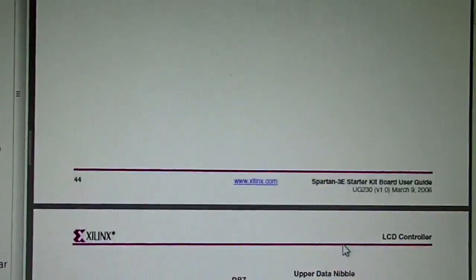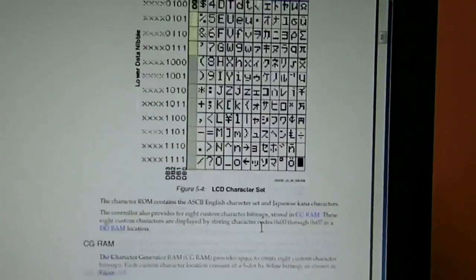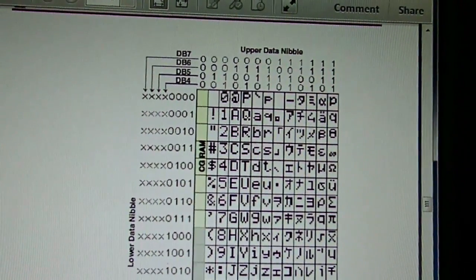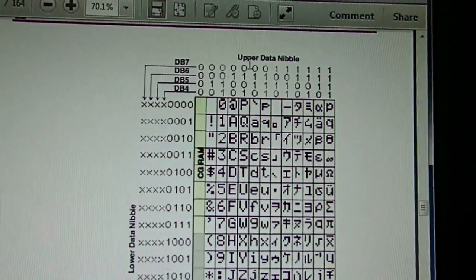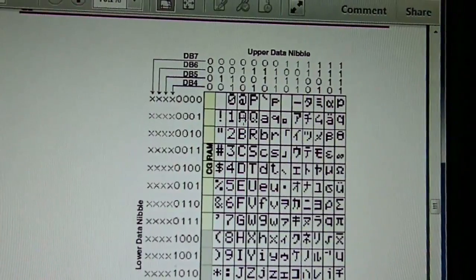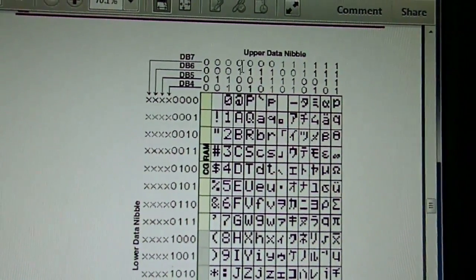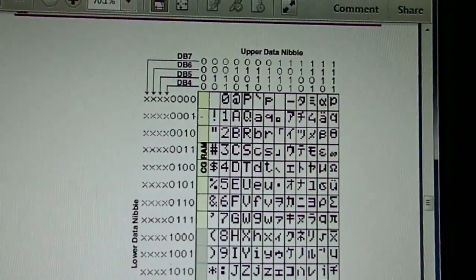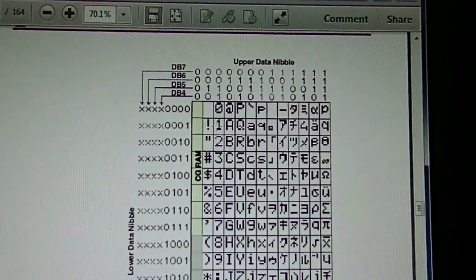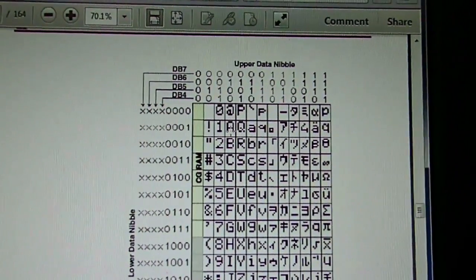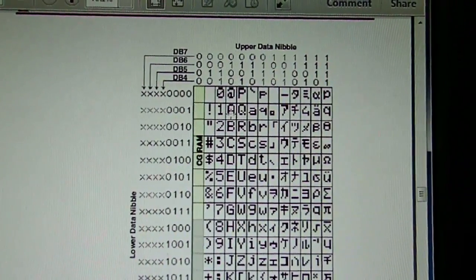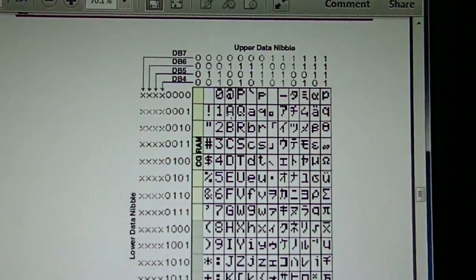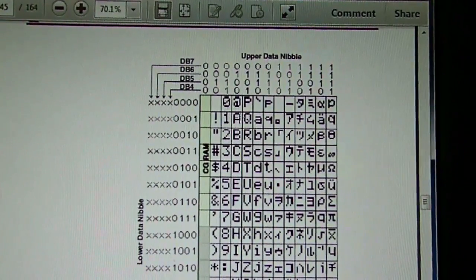As to the character set, it's listed out in this table here. Each character is indexed by the column and row. The column index is the upper data nibble. Such as the letter A, uppercase letter A, will be 0100 as the upper data nibble and the lower one 0001. So both of these two nibbles index into this table. If we send to the LCD the character indexes 0100 and then 0001, the character A image will show up where the cursor is.